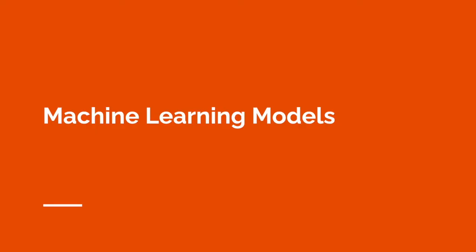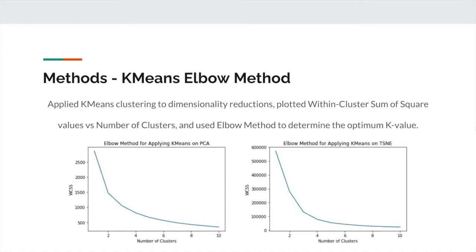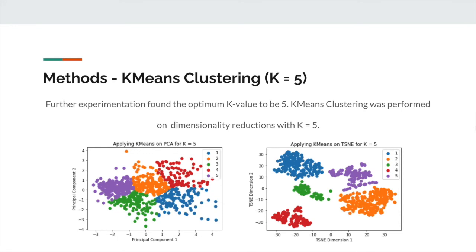This is Robert Trey Quinn, and I'm going to provide an overview of the methods used for unsupervised learning. We began preparing the dataset for clustering by applying dimensionality reduction using principal component analysis and t-stochastic neighbor embedding. The results are visualized here. Next, we applied k-means clustering to the dimensionality reductions, plotted the within-cluster sum of squares values versus the number of clusters, and used the elbow method on those graphs to attempt to determine the optimum k value for clustering. Further experimentation found the optimum k value to be 5 for both datasets, and k-means clustering was performed with k set to 5.